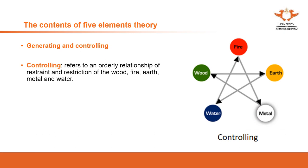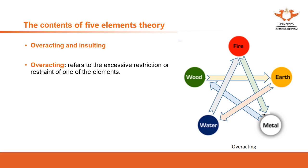However, in some situations the balance of generating and controlling will be damaged. Once damaged, it becomes a pathological condition, and we use another term: overacting and insulting. Overacting refers to the excessive restraint of one element over another. Normally, wood will control the earth, but in some situations, if the wood controls the earth too much, we call it overacting — the wood overacts on the earth. This causes pathological changes. Similarly, earth overacts on water, water overacts on fire, fire overacts on metal, and metal overacts on wood.